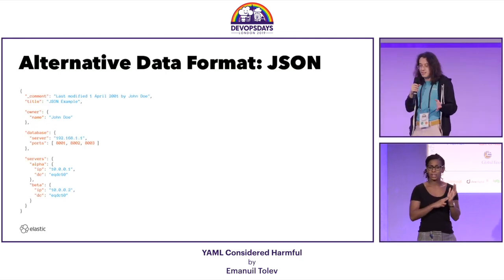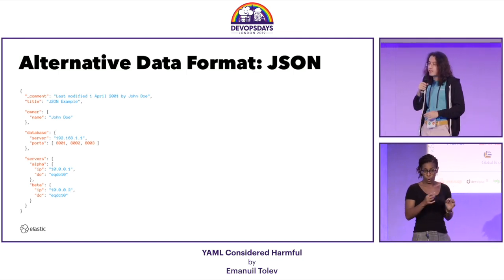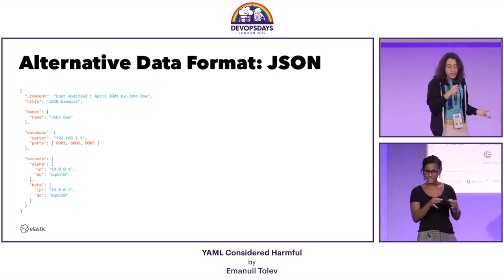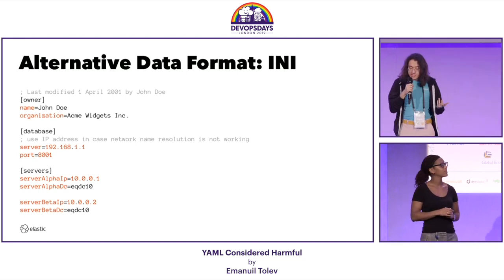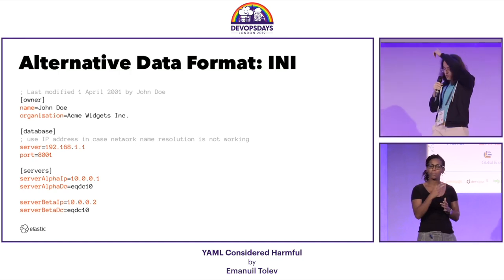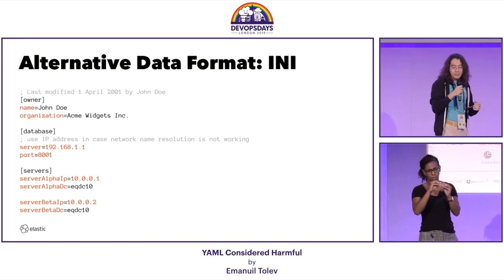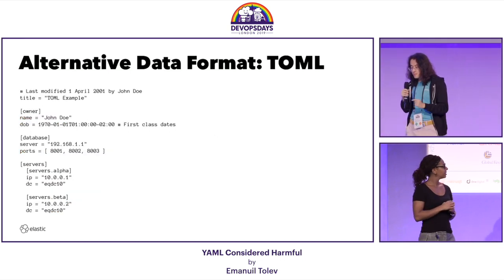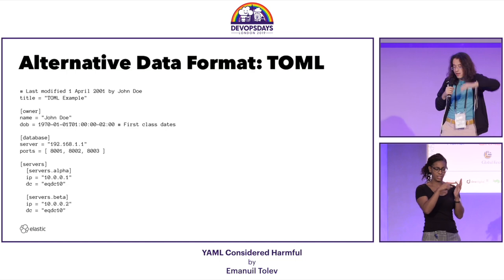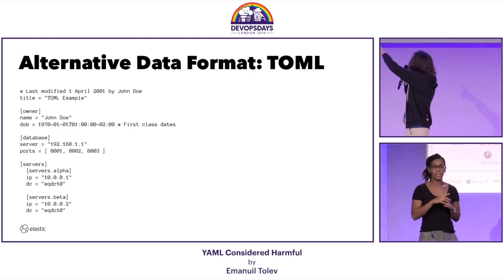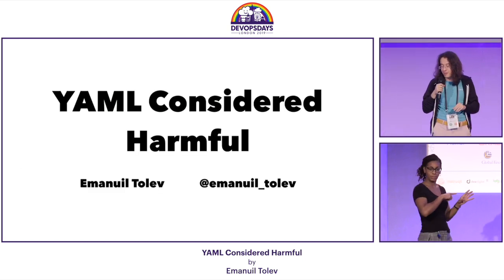JSON is actually okay as a config language, but it has two main problems: no comments, which is a big problem, and no multi-line strings. Then there is INI — old-fashioned, but quite good. The thing is you end up with things like 'server alpha IP' — like German compound nouns in camel case. TOML is an attempt to improve on INI and does have hierarchy, but the nice whitespace visual hierarchy is not a requirement in TOML, so you could end up with a fairly confusing structure.